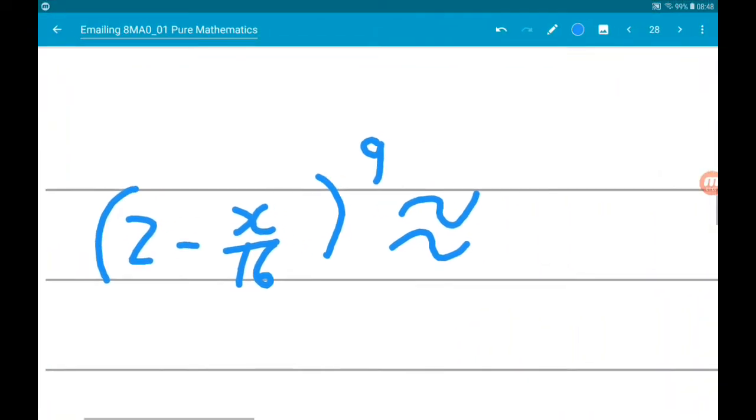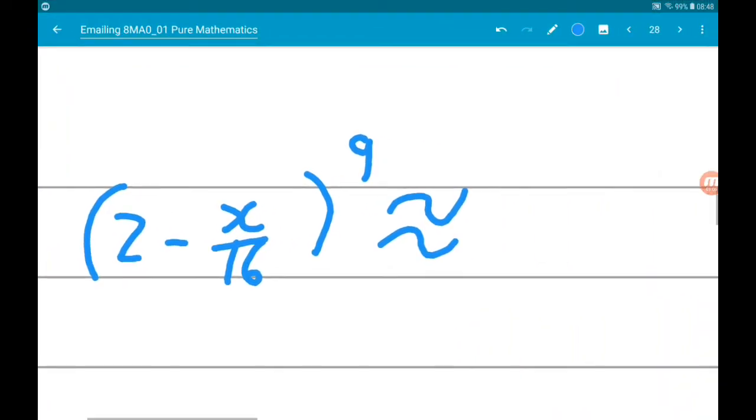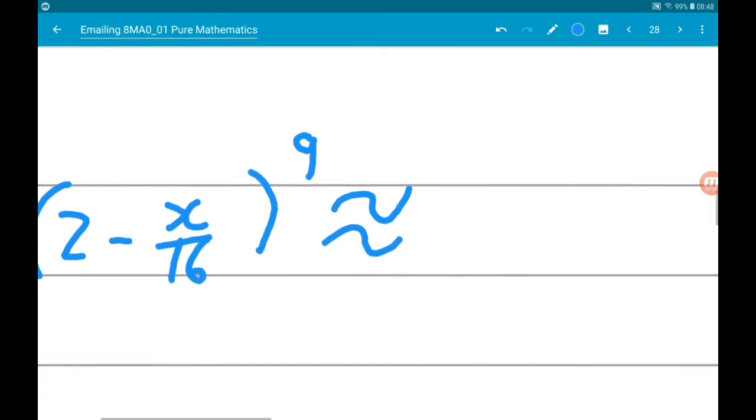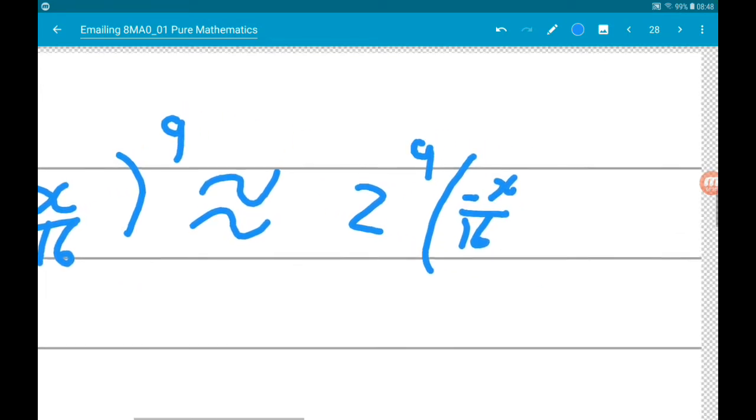The first term is always the first number in the bracket to the whole power. So, 2 to the power of 9, and if you like, it's times minus x over 16 to the power of 0.